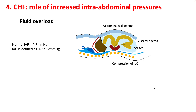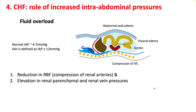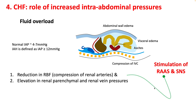Another aspect of heart failure which is often overlooked is increasing intra-abdominal pressures. Because of fluid overload, you develop abdominal wall edema and visceral edema along with ascites. This results in reduction of renal blood flow due to compression of renal arteries and elevation of parenchymal and adrenal vein pressures, which also stimulates your renin-angiotensin system.